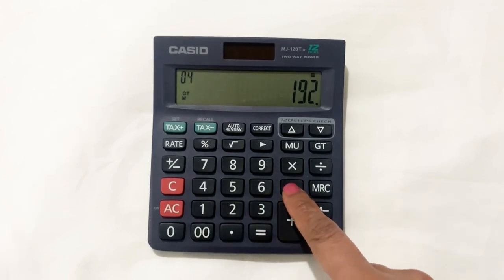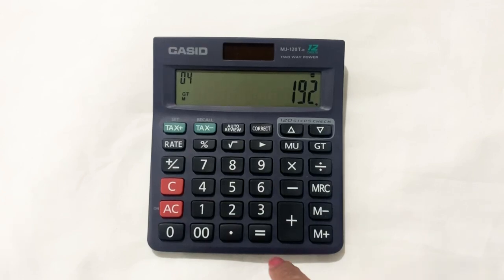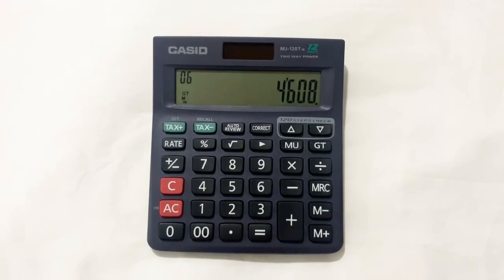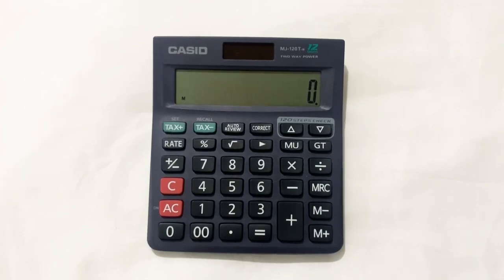After this, press the minus button. At the end, press the equal sign. So here's the final answer: 4608, the final price after 4% off. Let's move on to another example.